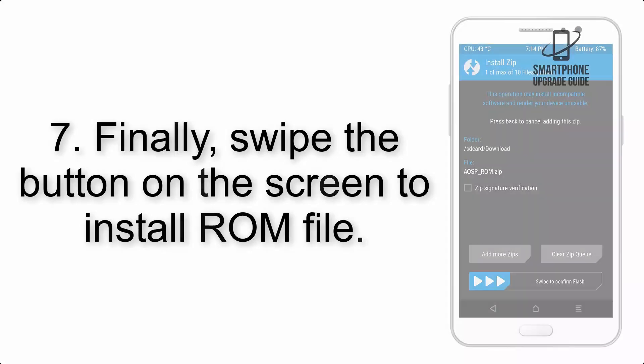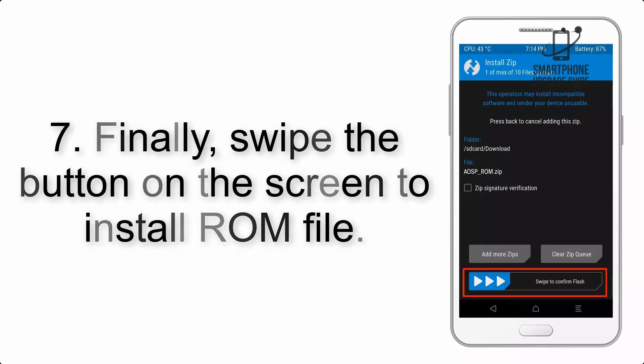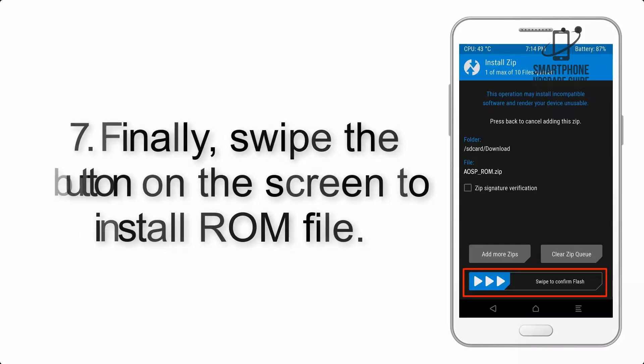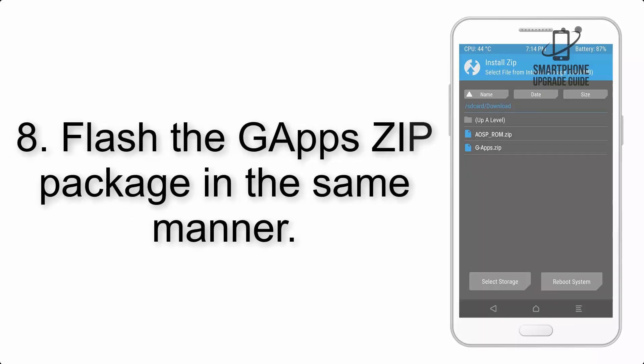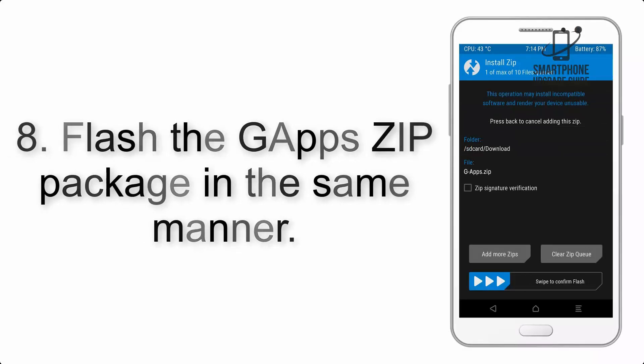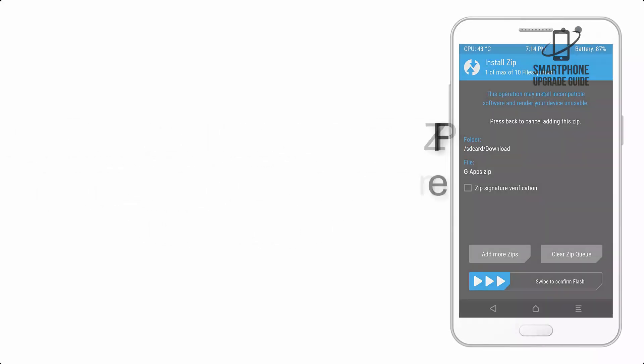Step 7: Finally, swipe the button on the screen to install the ROM file. Step 8: Flash the GApps zip package in the same manner.